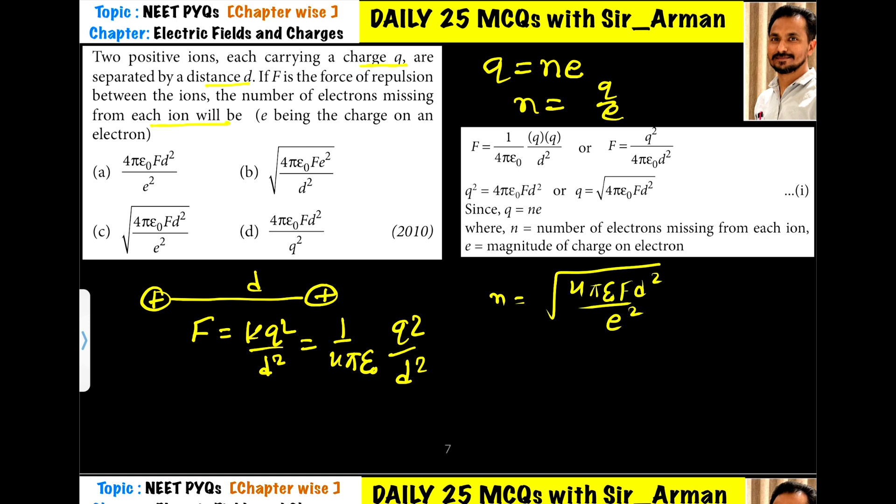From this expression, if we make q squared as a subject, q squared equals F into d squared into 4 pi epsilon 0. This can be rewritten as q equals under root F d squared 4 pi epsilon 0.